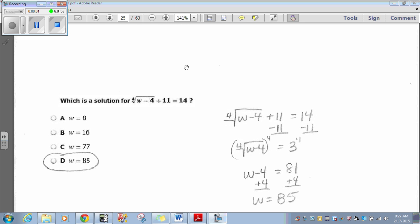Okay, everybody. Mr. Shua back at you. We're starting with question 21. We're picking up from there. Which is a solution for the fourth root of w minus 4 plus 11 equals 14?